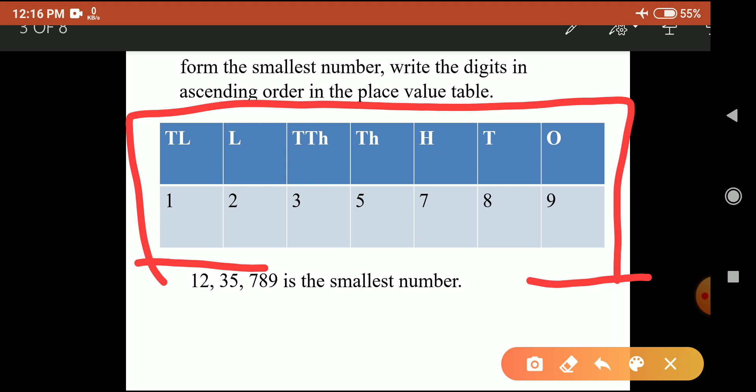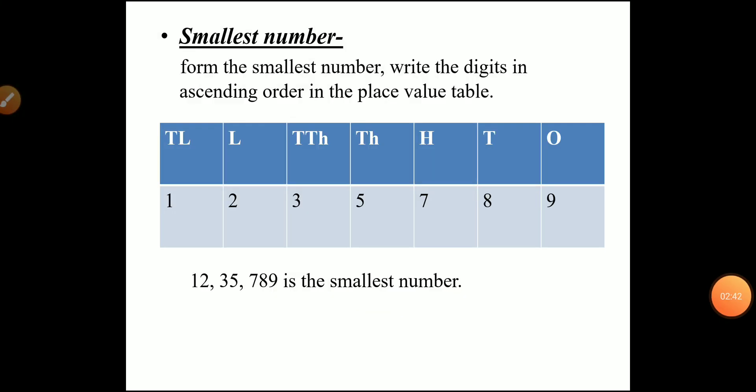Each digit is larger than its previous: 2 is larger than 1, 3 is greater than 2, 5 is greater than 3, 7 is greater than 5, 8 is greater than 7, and 9 is the greatest while 1 is the smallest. The pattern ranges from lower to higher. The smallest number formed is 12,35,789 — twelve lakh thirty-five thousand seven hundred and eighty-nine — using the without-repetition method.